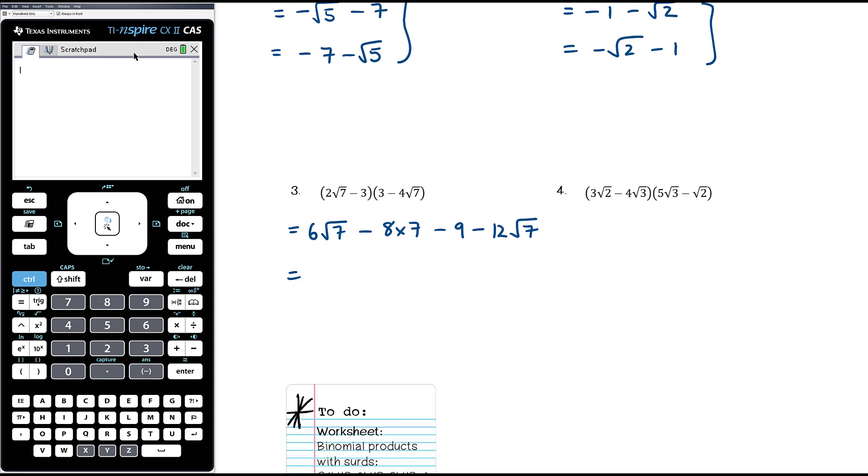6 root 7 minus 12 root 7 is negative 6 root 7. So I've got a lot of negatives in these examples, sorry, it wasn't deliberate. 8 times 7, 7 eights are 56, so negative 56 take away 9 is negative 65. And so that's our answer. Again, you could write it as negative 65 minus 6 root 7. Neither is better or worse than the other. Exactly the same.